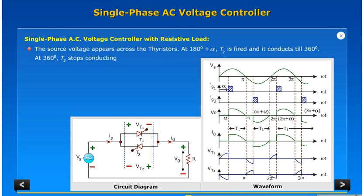At 180 degrees plus alpha, T2 is fired and it conducts till 360 degrees. At 360 degrees T2 stops conducting. The firing pulses of T1 and T2 are 180 degrees apart.